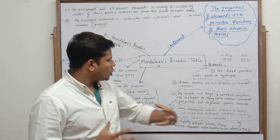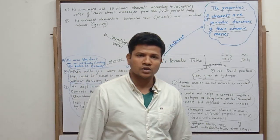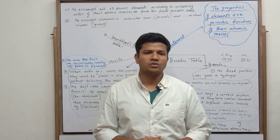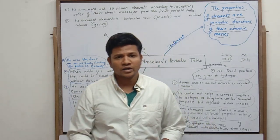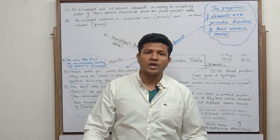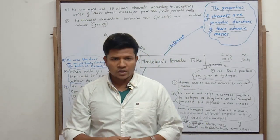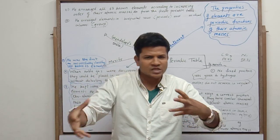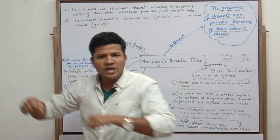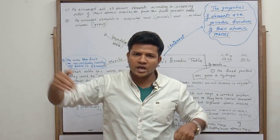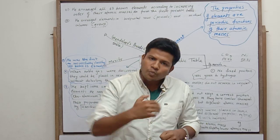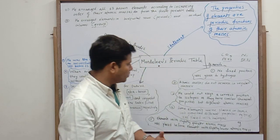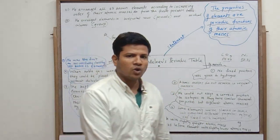The second demerit: atomic masses do not increase in a regular manner. In his table, atomic masses were not increasing or decreasing in a regular way, making it difficult to estimate how many elements could exist between two given elements. The difference in atomic mass between element A and B was not the same as between B and C or C and D — it was not gradual, so it was not possible to identify how many elements could exist in between.